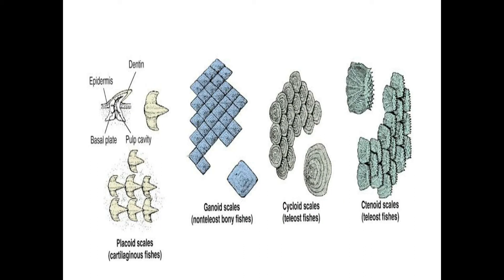Here are placoid scales which are present all over the body of the fish, protecting from other species and debris. These are the ganoid scales. Here is a range of ganoid scales. These are cycloid scales which show rings, and this is ctenoid scales — here are the spines which are present on the ctenoid scales. The difference between cycloid and ctenoid scales is that ctenoid scales show spines.